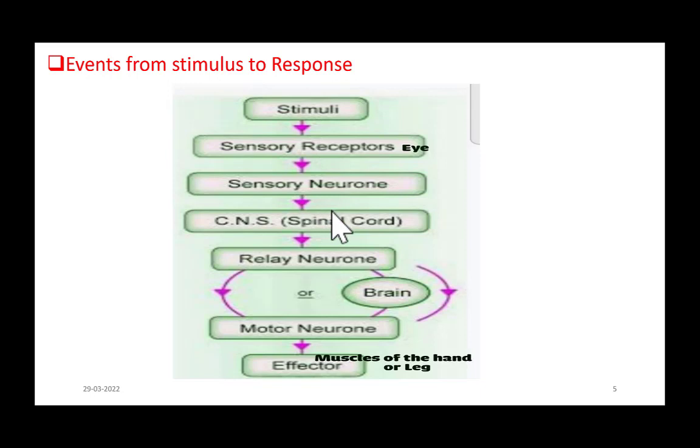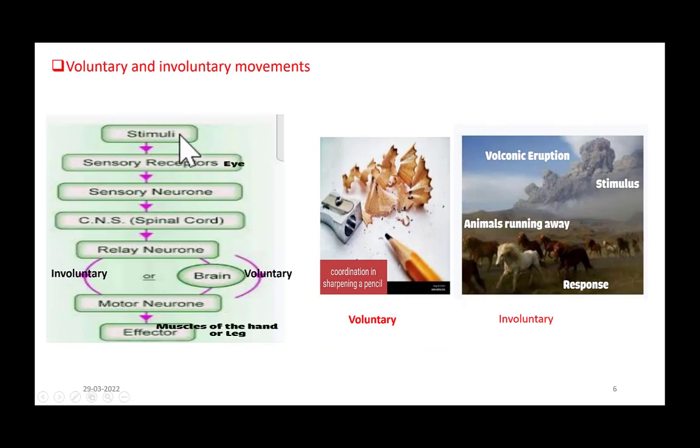These are the events that take place between stimulus and response. If you observe this flow chart, there are two pathways between relay neurons and effectors. One pathway does not involve brain and is called the involuntary pathway, leading to involuntary movements. The pathway that involves brain is called the voluntary pathway and leads to voluntary movements. So there are two types of movements or responses in our body. They are voluntary and involuntary movements or responses.